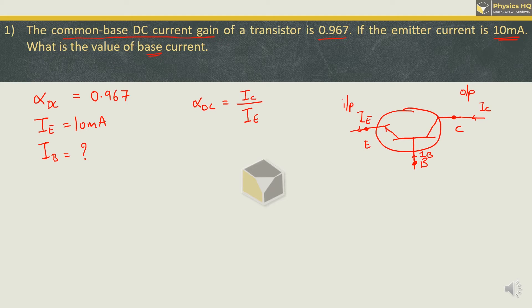When we rearrange this, we get IC equals alpha DC times IE. Let us put the values: 0.967 times 10 mA, which is 10 raised to minus 3. When we multiply, we get 9.67 times 10 raised to minus 3.